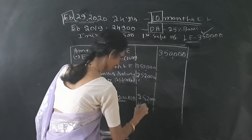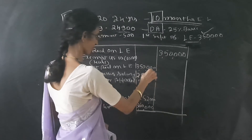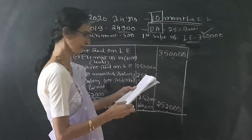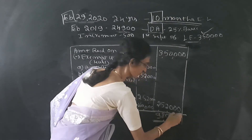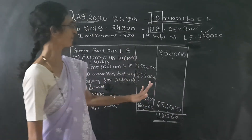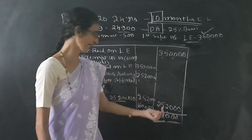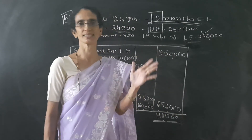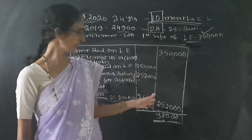The last item is the statutory limit of 3,00,000. Whichever is the least, we have to take. The least of the following is 2,52,000. Deducting 2,52,000 from 3,50,000, we get the taxable encashment. The taxable encashment of leave is 98,000. So out of 3,50,000 received, 98,000 is the taxable leave encashment.